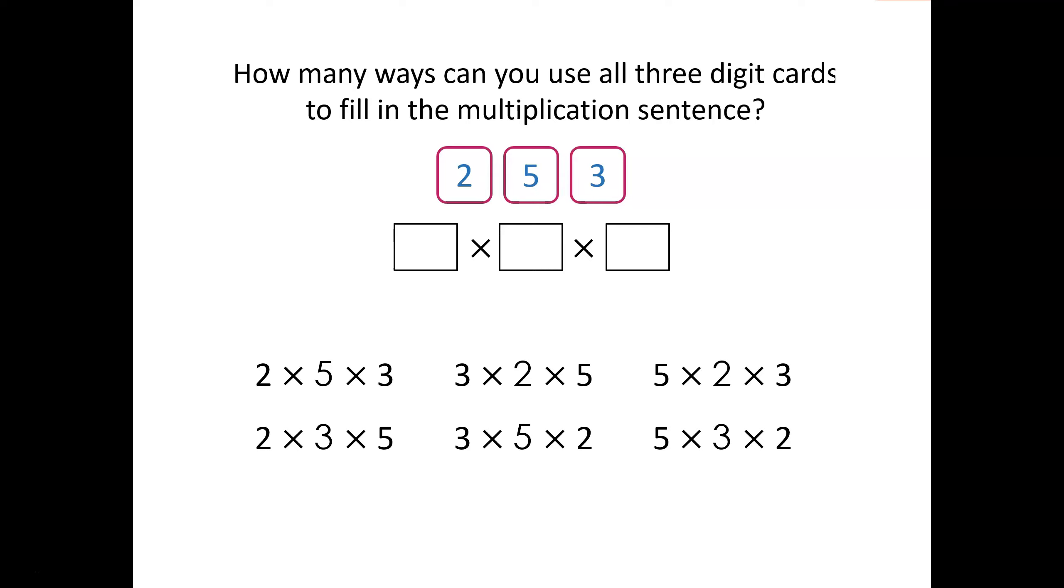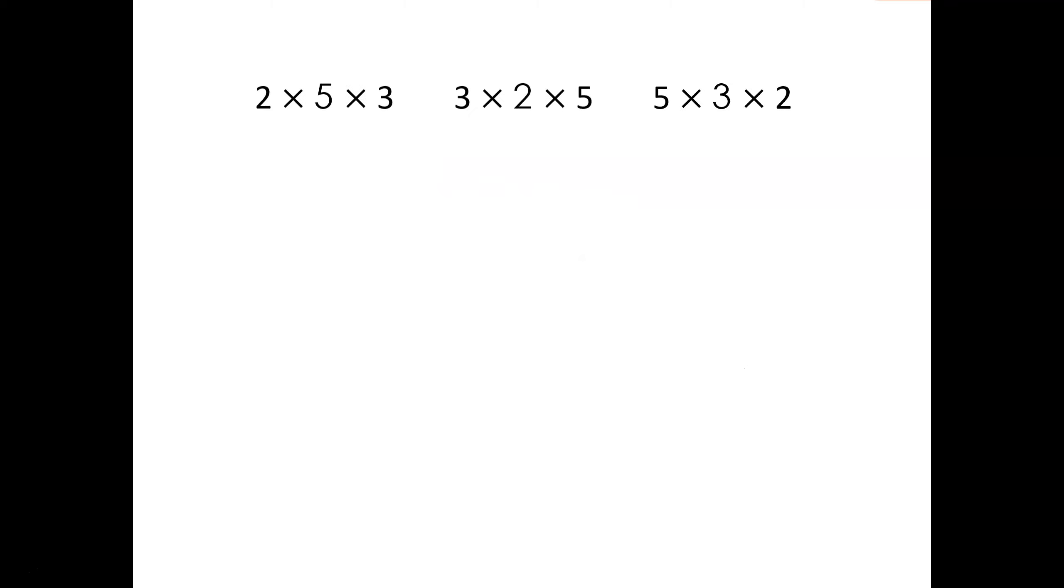Does the order in which we complete the calculations affect the total product? Let's see. We can multiply the numbers in any order and the product is always going to be the same. This is because multiplication is commutative, and that means we can decide which order to multiply depending on which we find easier.